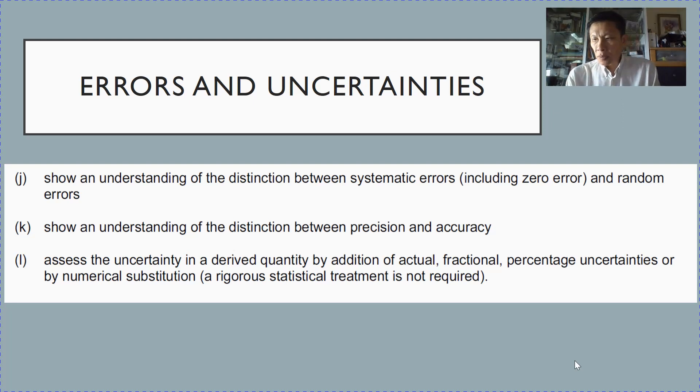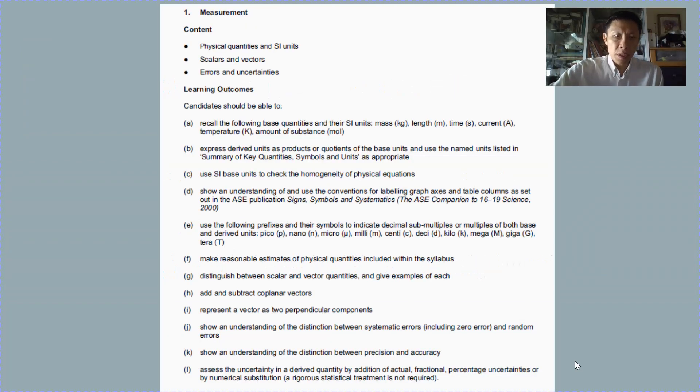The lesson objectives for this topic include understanding the distinction between systematic errors and random errors. You also need to know the distinction between precision and accuracy. And the last lesson objective is to solve problems where you calculate the uncertainty of a derived quantity. These three lesson objectives are the last three for the H2 syllabus topic titled Measurement.